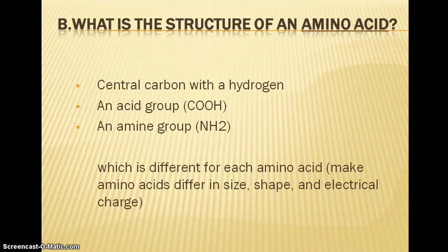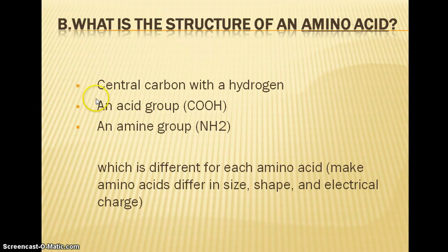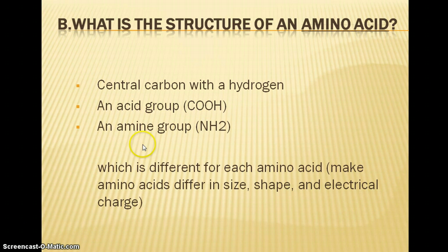Here we're looking at the structure of an amino acid. Amino acids are the building blocks of proteins, so every amino acid is going to have a central carbon — we'll look at a visual of this in the next couple of slides. Every amino acid is going to have an acid group (the COOH group) and an amine group, which is a nitrogen-containing group.